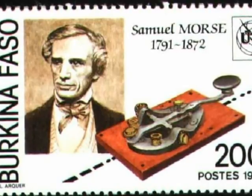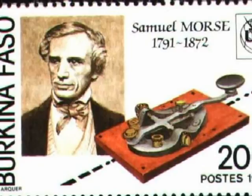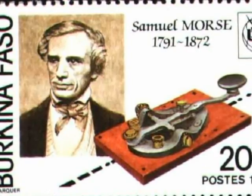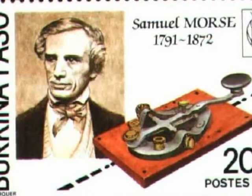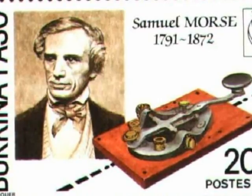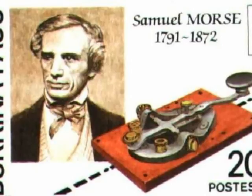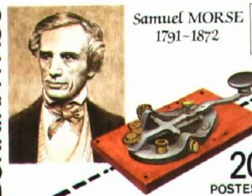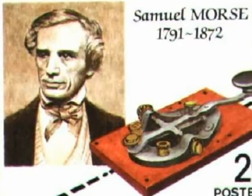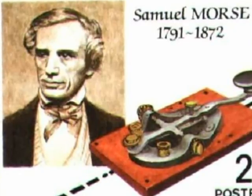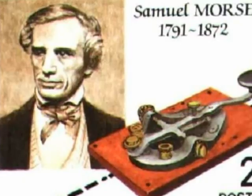Samuel F.B. Morse was born on April 27, 1791 in Charlestown, Massachusetts. He died on April 2, 1872. He attended Yale College. He was an American painter who turned into an inventor. He was a co-developer of the Morse code and he also developed the telegraph.